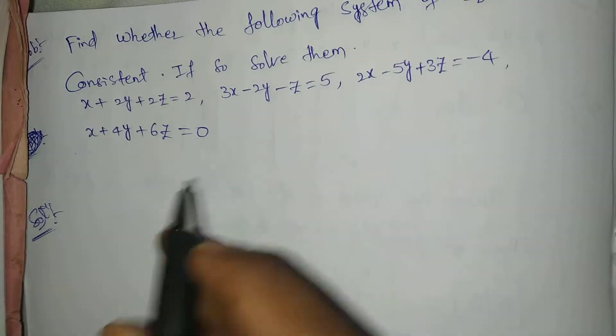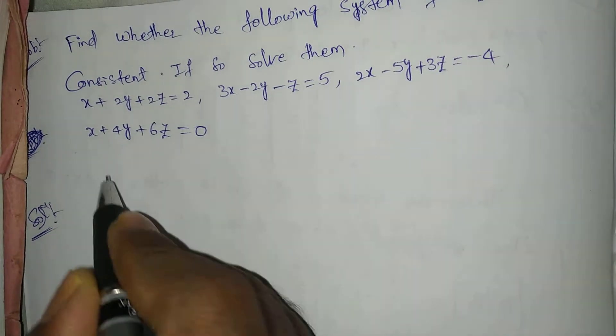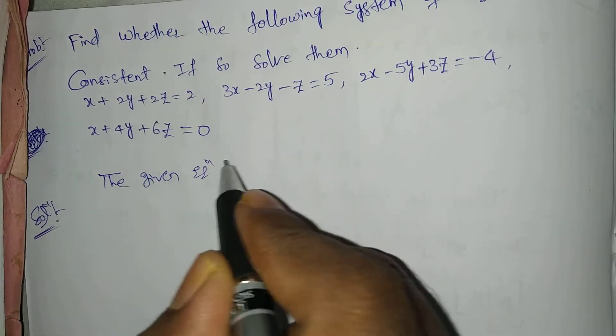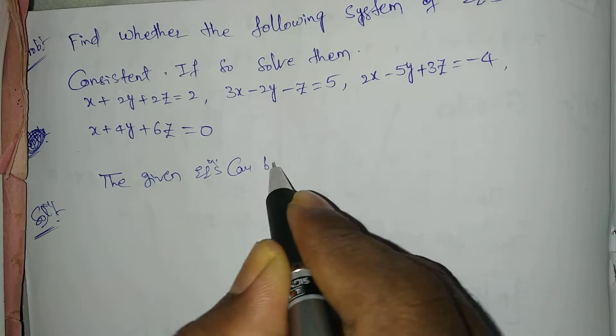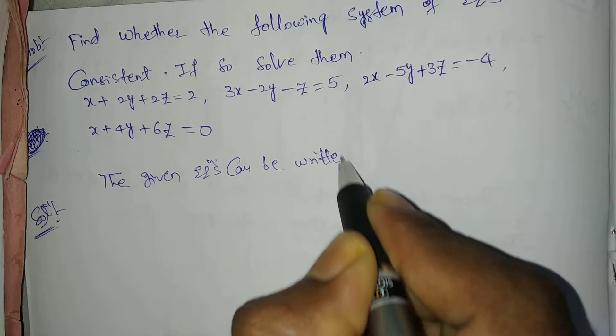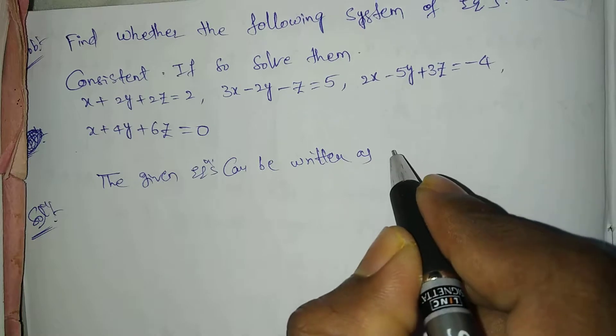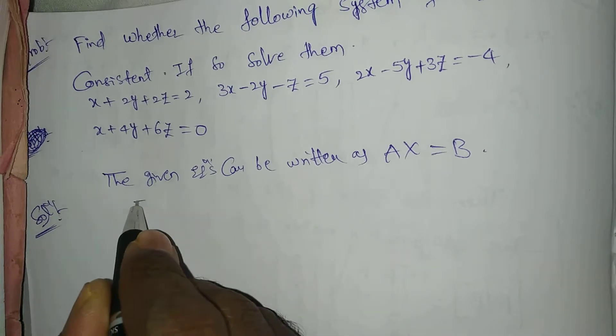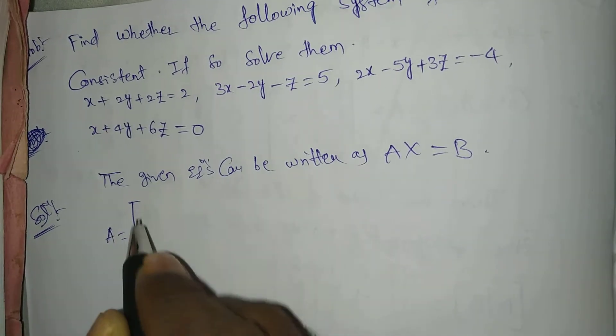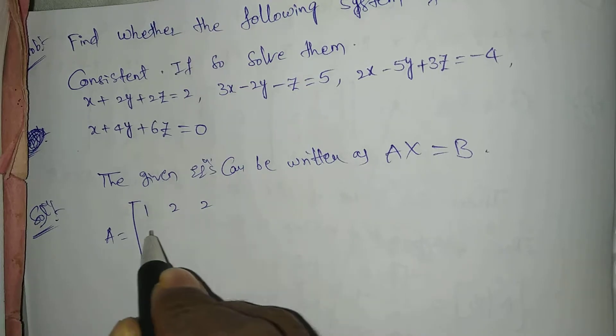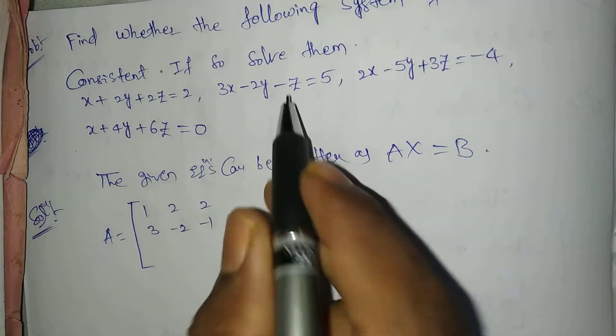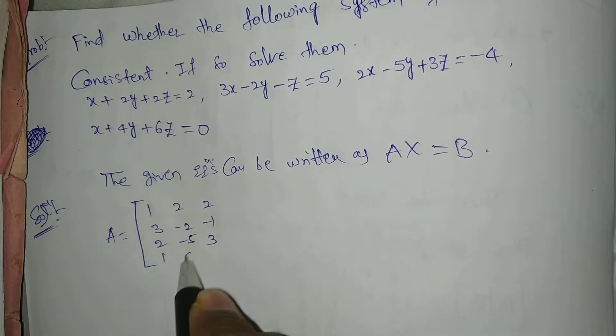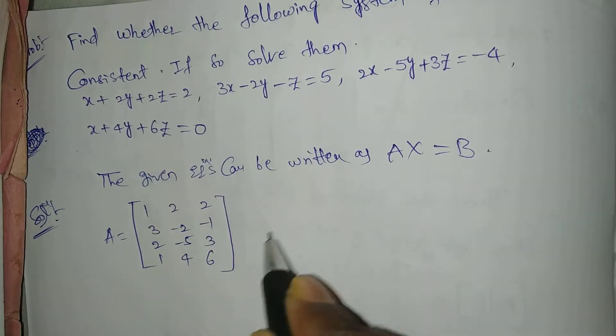Consider the given equations. The given equations can be written as A x equal B. But what is A? A equal to 1, 2, 2, 3 minus 2 minus 1. These are x, y, z coefficients. 2 minus 5, 3. Next, 1, 4, 6. This is A matrix.